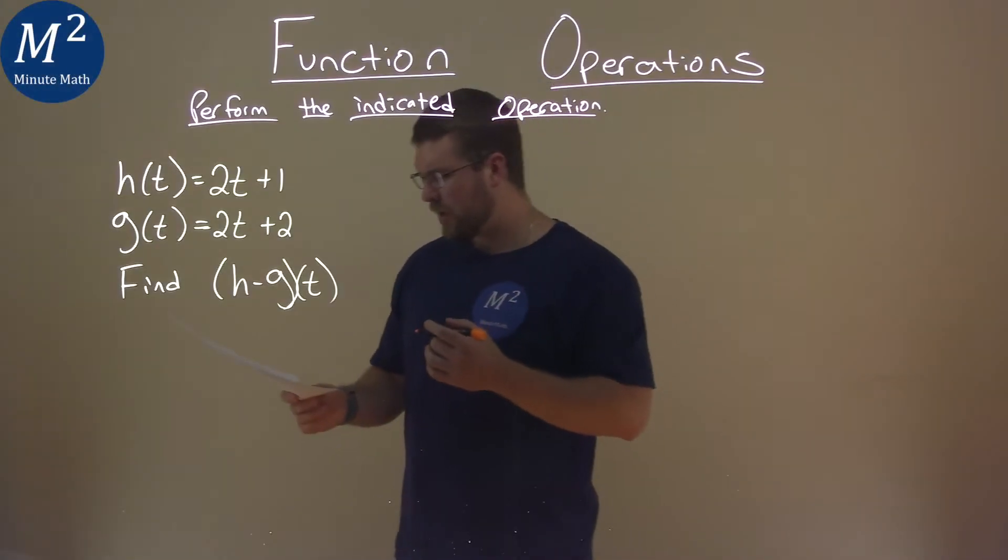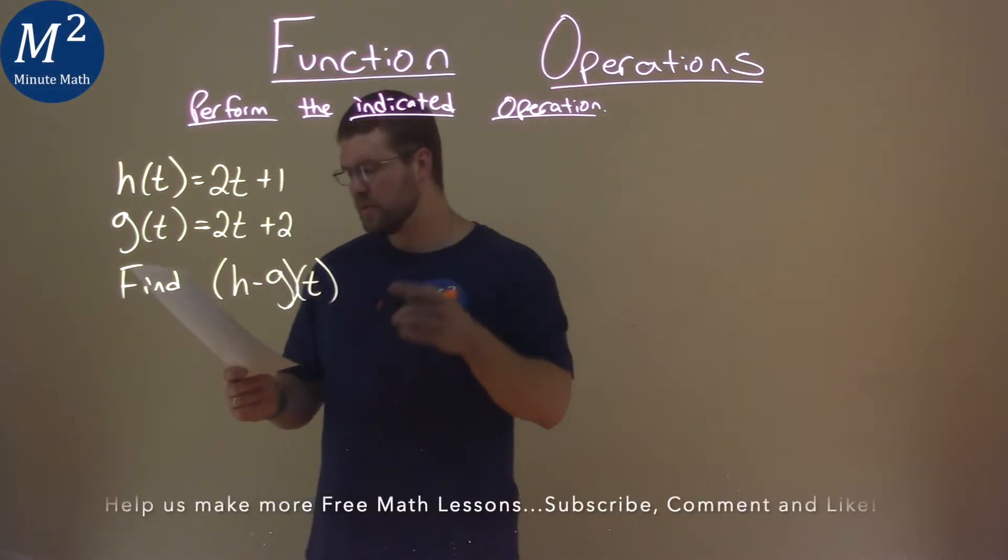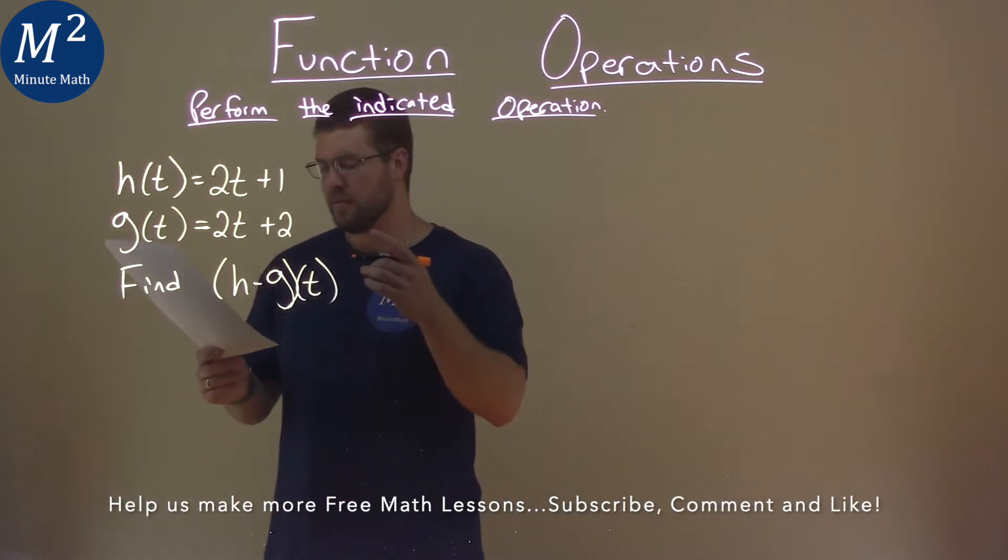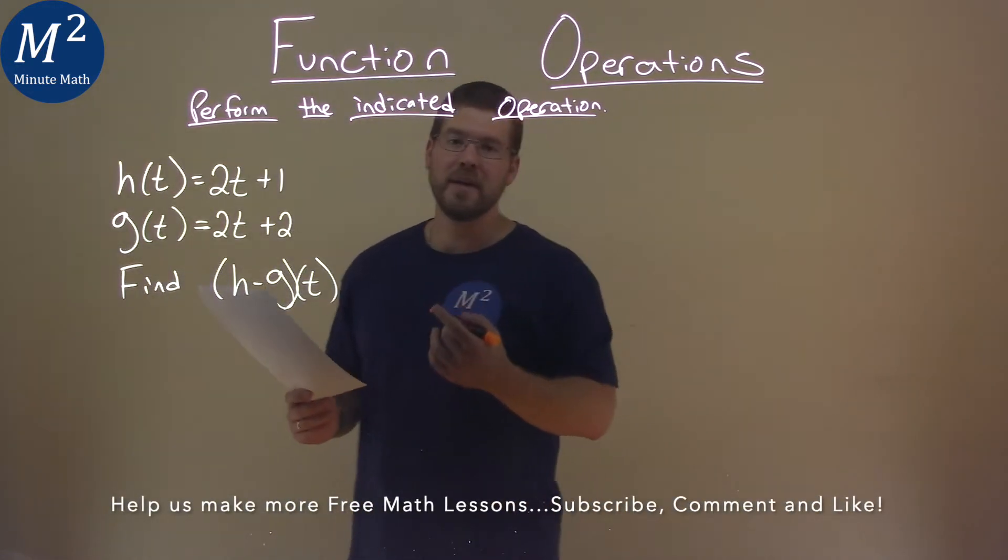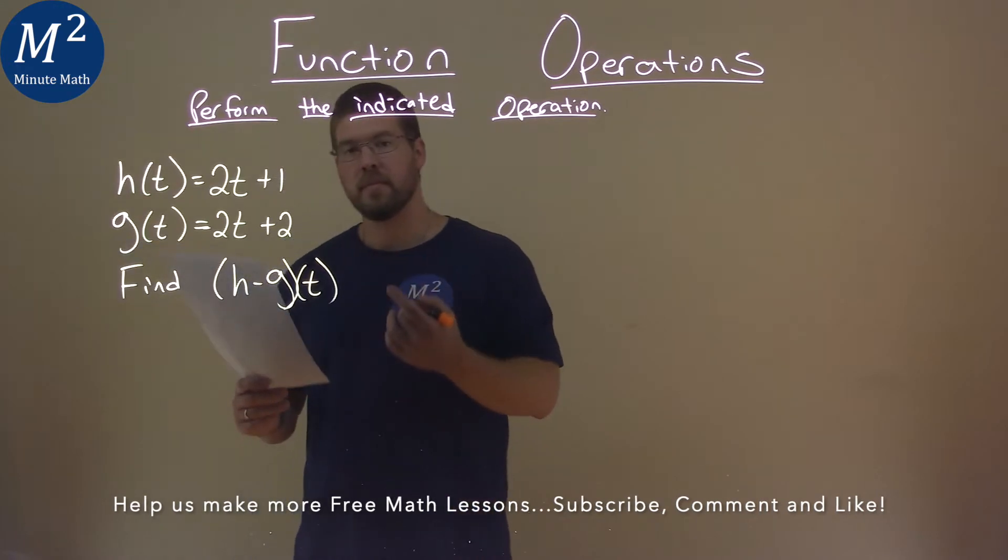We're given this problem right here. h of t equals 2t plus 1, g of t is equal to 2t plus 2, and we need to find h minus g of t.